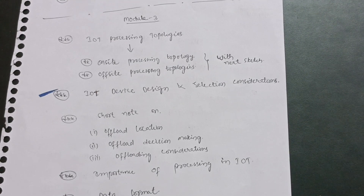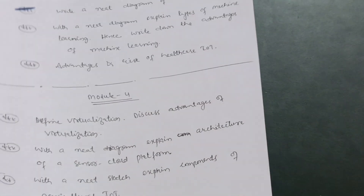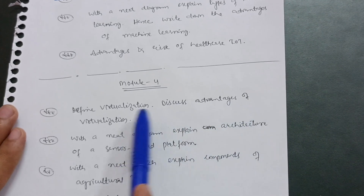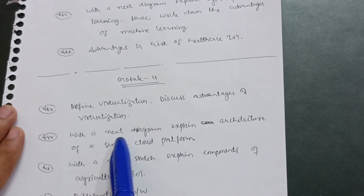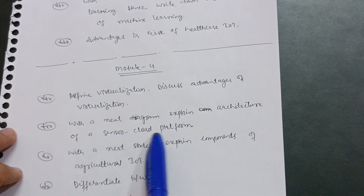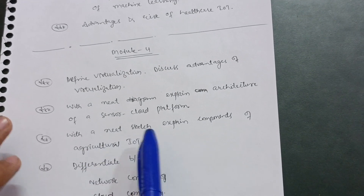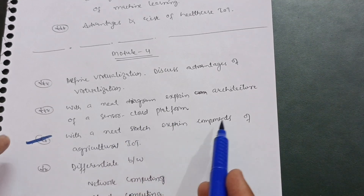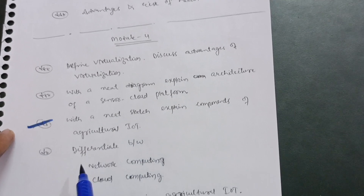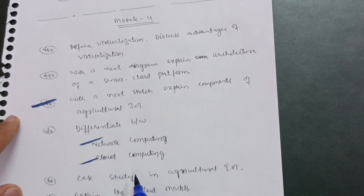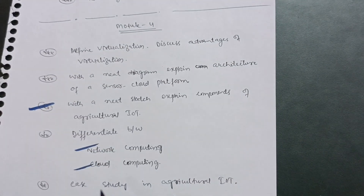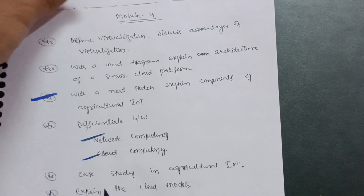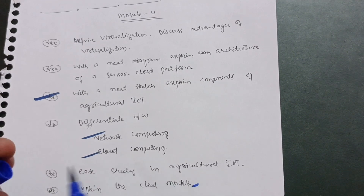Module 4 is for those who want to score higher. You have to cover: define virtualization and discuss its advantages, with a neat diagram explain the architecture of a sensor cloud platform, with a neat diagram explain components of agricultural IoT — which is the most important one — and differentiate between network computing and cloud computing. You must also study the case study in agricultural IoT and explain the cloud models.